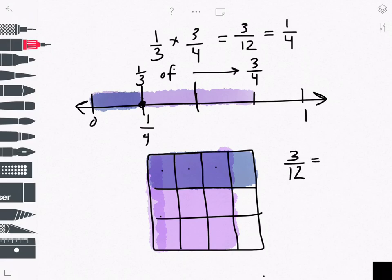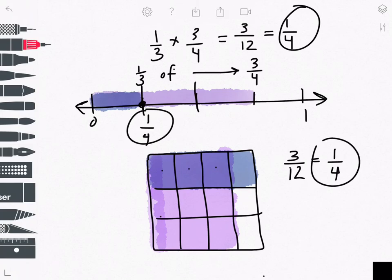And again, I can simplify by dividing by 3 to get my product 1 fourth.